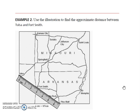Let's look at the map for a minute. Here is Tulsa, and here's Fort Smith. With this ruler, we can see that in centimeters, the approximate distance on the map is just over two and a half centimeters, about 2.6. Here we have a scale for our map that says 1 centimeter corresponds to 85 kilometers.